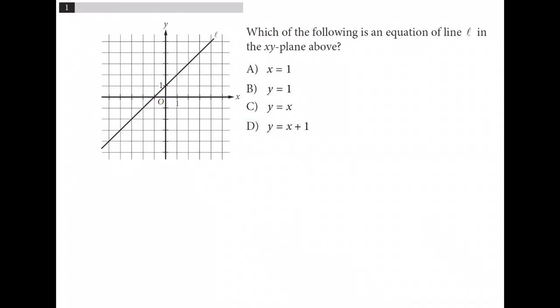The reason we need this plus 1 is because the y intercept is here at 1. And then the slope is 1 so we go up 1 over 1, up 1 over 1, up 1 over 1, that's our line.